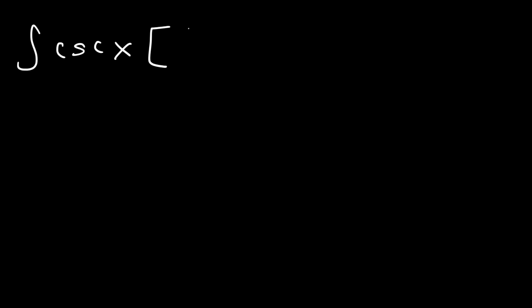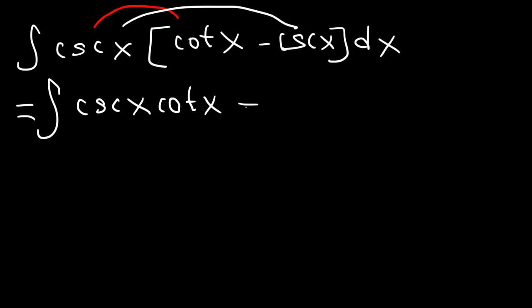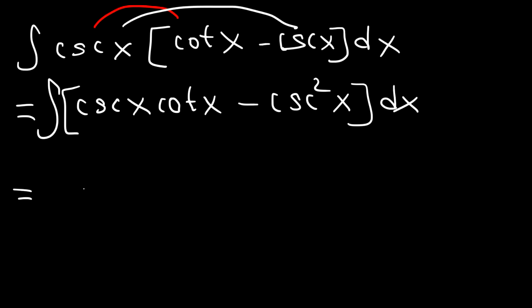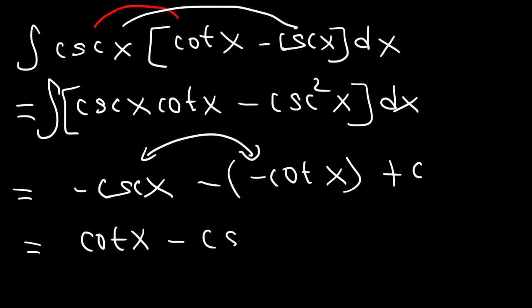Let's work on one more trig example: integrate cosecant x times (cotangent x minus cosecant x). We need to rewrite it first — distribute cosecant to get cosecant cotangent minus cosecant squared. The antiderivative of cosecant cotangent is negative cosecant x, and the antiderivative of cosecant squared is negative cotangent x. So the final answer is positive cotangent x minus cosecant x plus c, because we have two negative signs making the cotangent term positive.